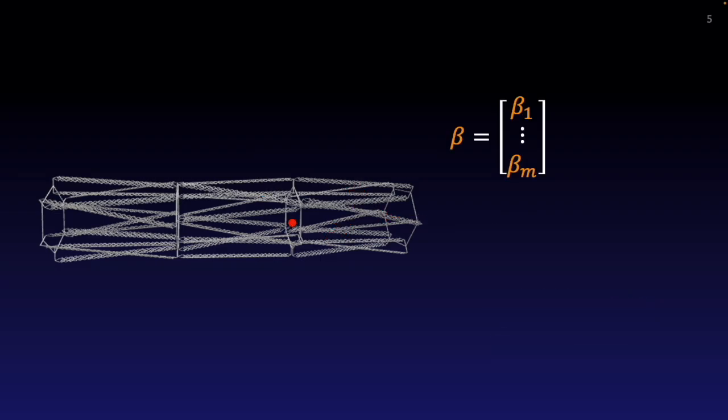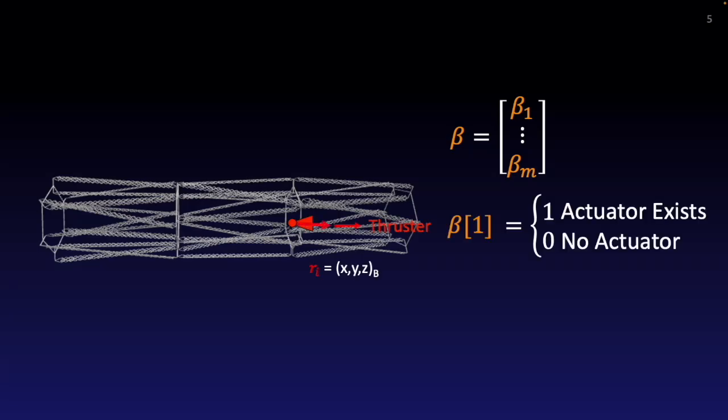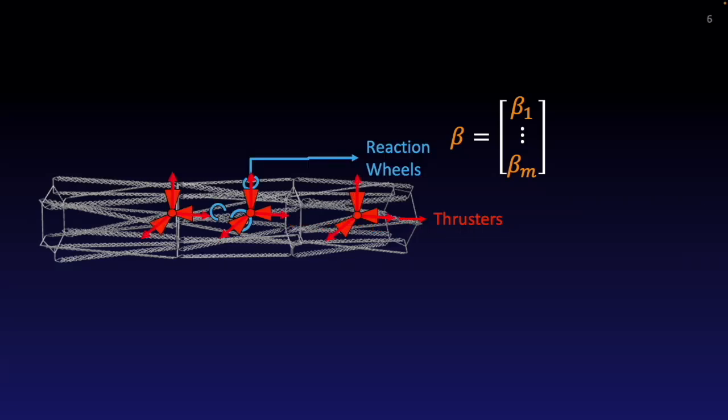To this end, we consider a binary actuator selector vector beta, where each element in beta represents the existence of an actuator at a location r. For example, if the element beta[1] is equal to 1, then there is a thruster at that location. Otherwise, there is no thruster at that position. A dense set of actuator types at various locations is enumerated a priori.